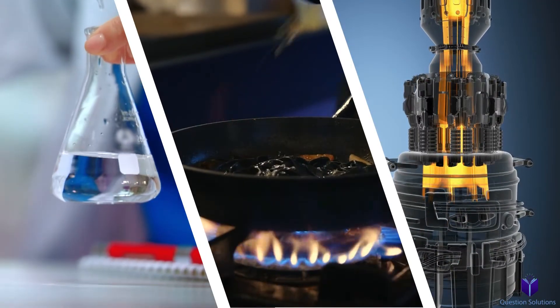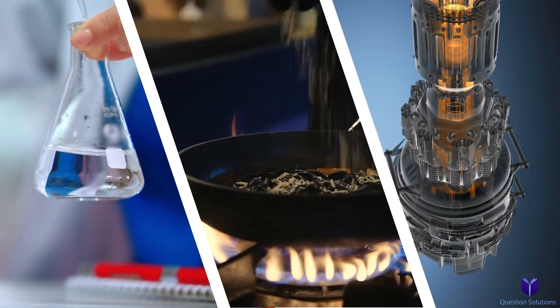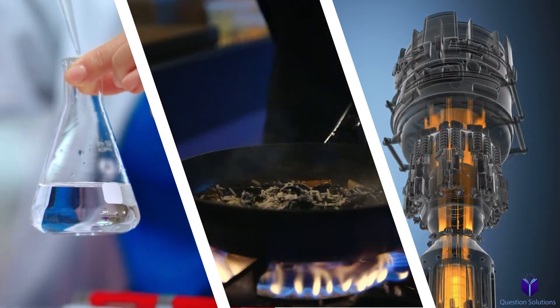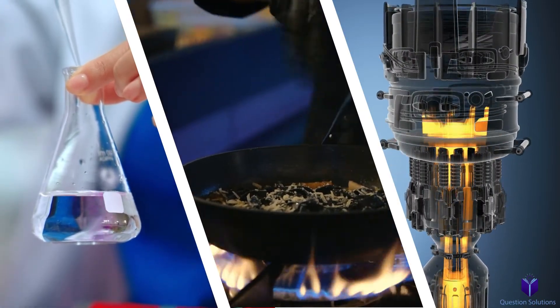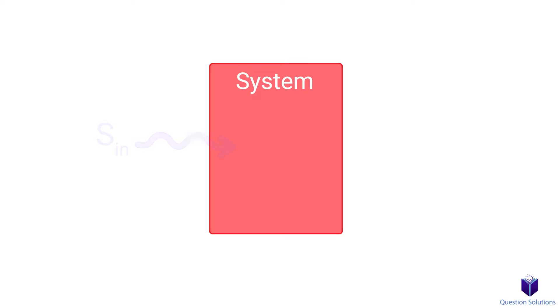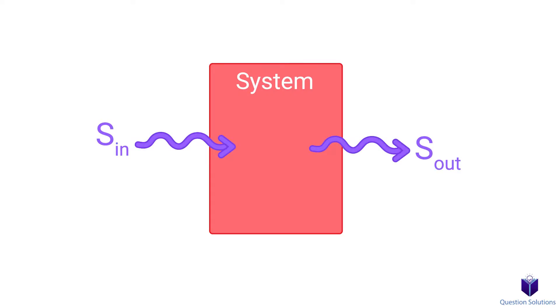We know how to do energy balance pretty well by now, so now we're moving on to entropy balance. Entropy balance is a bit different compared to energy balance because entropy change is almost always greater than the entropy transfer to a system, since entropy is generated during a process. If we have a system, we have some entropy entering, some leaving, but we also have entropy generated through the process. That's the key difference with entropy balance.